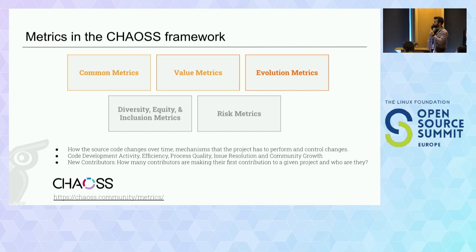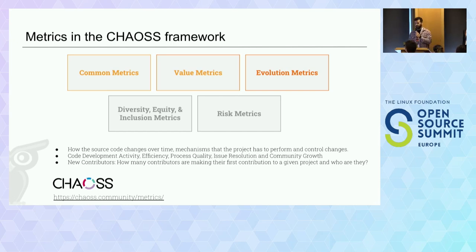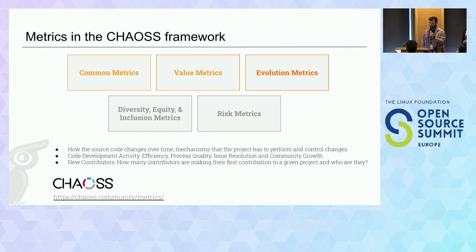The third group is Evolution Metrics, where the goal is to address aspects related to how the source code changed over time and the mechanisms the project has to control those changes. Focus areas include code development activity, efficiency, code development process quality, issue resolution, and community growth. One example metric is New Contributors — we can see how many contributors are making their first contribution to a given project, and who they are.